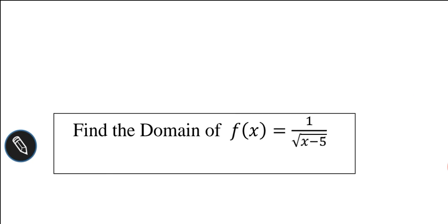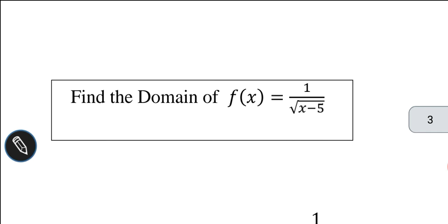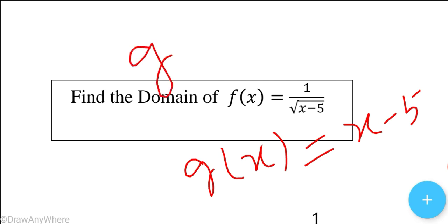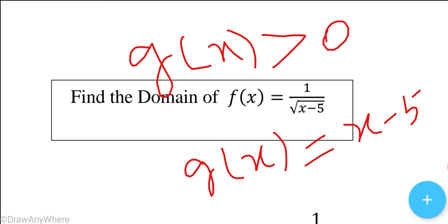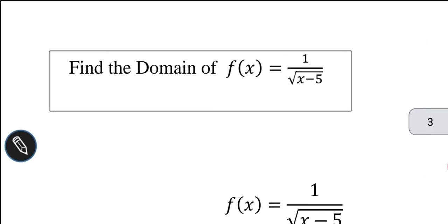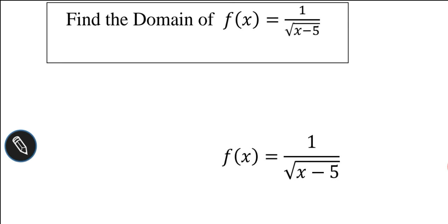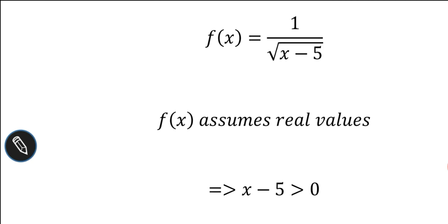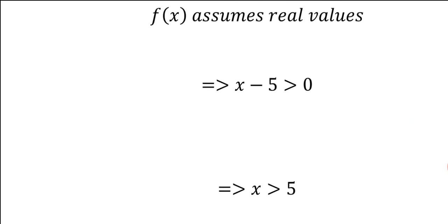Find the domain of f(x) = 1 divided by square root of x minus 5. In this problem, g(x) is equal to x minus 5. So g(x) greater than 0 means x minus 5 greater than 0. Since f(x) assumes real values, x minus 5 greater than 0. Moving 5 to the right side gives x greater than 5.